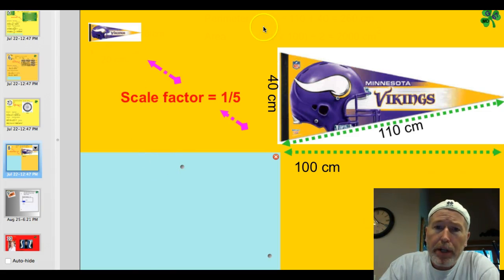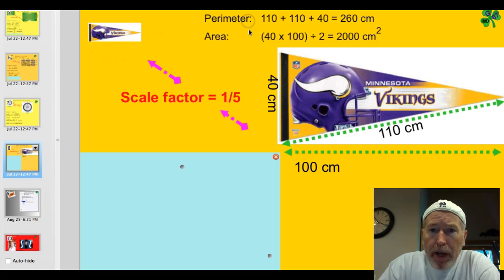Let's see how you did. Well, first you would have had to determine the perimeter and area of this larger one. So, we added up 110, 110, and 40, our three sides. We had 260 centimeters as our perimeter. The area was base times height divided by 2. So, that's 40 times 100. Then, we divide that by 2. We have 2,000 centimeters squared on the larger one.